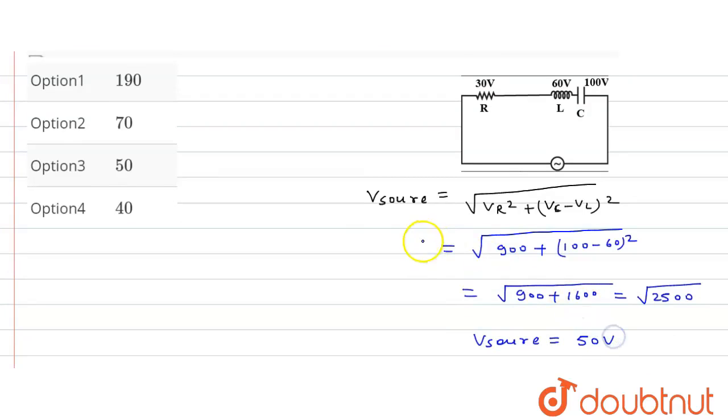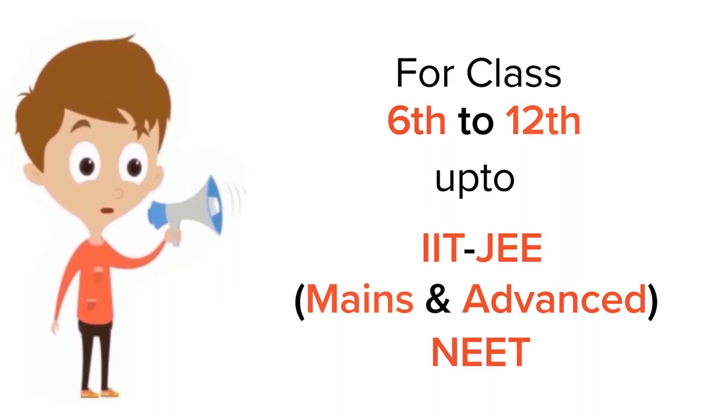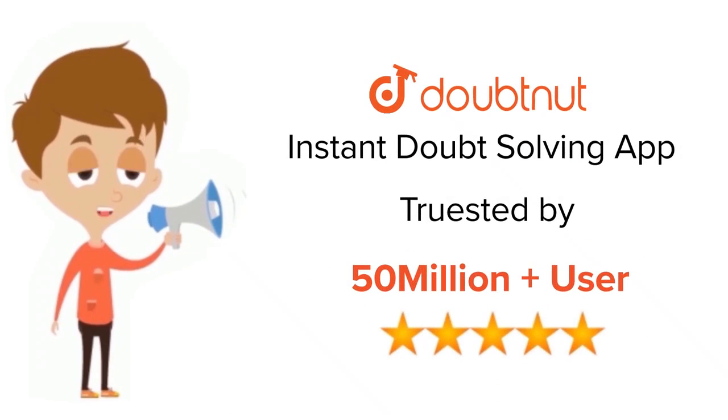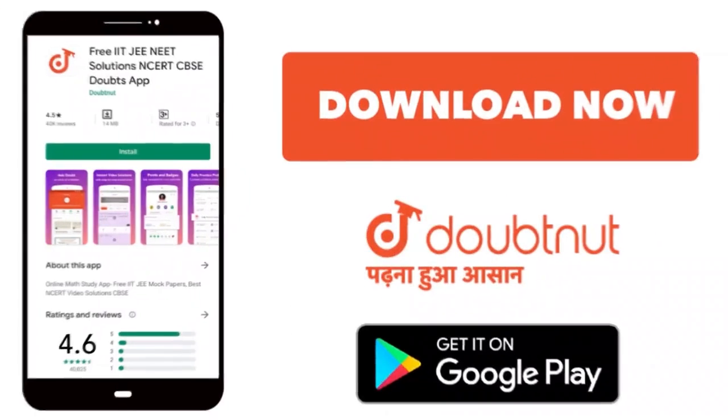Okay, so see here option third, option 3 is the correct option. Thank you. For class 6 to 12, IIT-JEE and NEET level, trusted by more than 5 crore students, download Doubtnet app today.